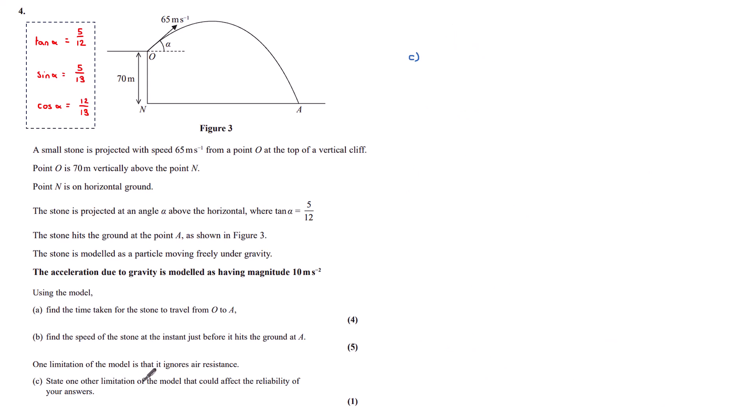One limitation of the model is that it ignores air resistance. Part C: state one other limitation of the model that could affect the reliability of your answers. And so typically with these questions, you want to go for something that has been named in the question. I would choose this nice thing in bold: acceleration due to gravity is modeled as magnitude 10. We know that this is not the most precise measurement. We know that acceleration due to gravity could be more accurate. Other acceptable answers involve the fact that it's been modeled as a particle. If it wasn't a particle, then it could spin and turn and all sorts of wonderful things. But sticking with the simplest answer here, this acceleration due to gravity could certainly be more accurate.